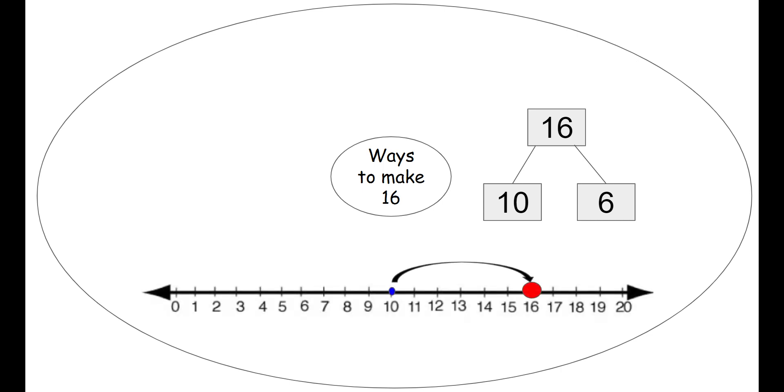We can also use our number line to make the number 16. If we start at the number 10 and then we jump six times. 1, 2, 3, 4, 5, 6. We end on the red dot, which is the number 16.